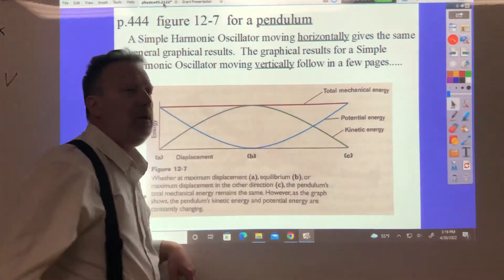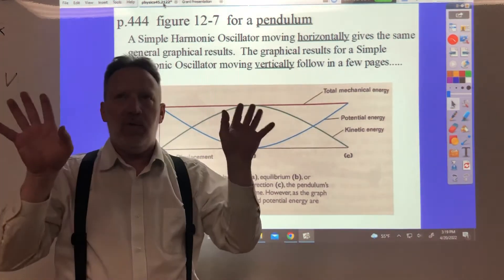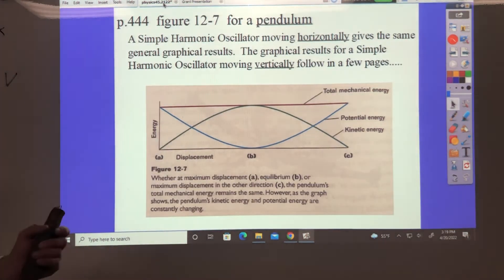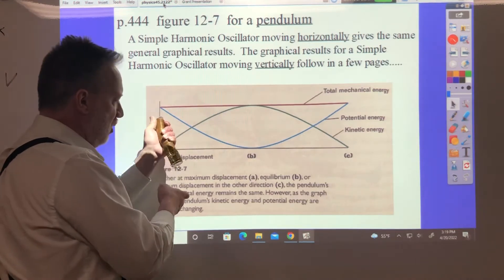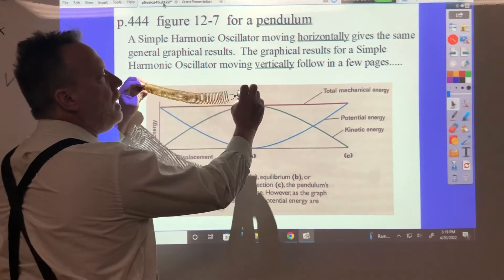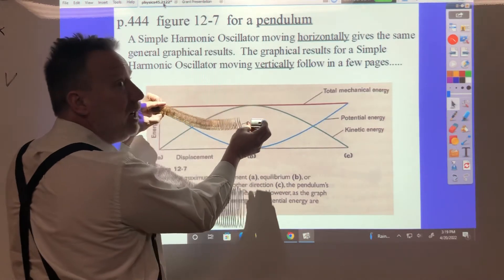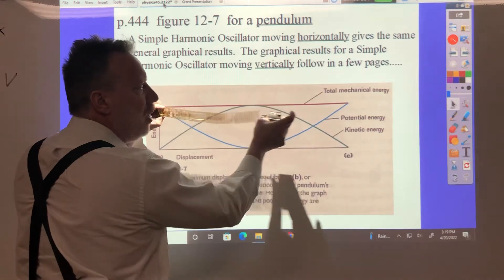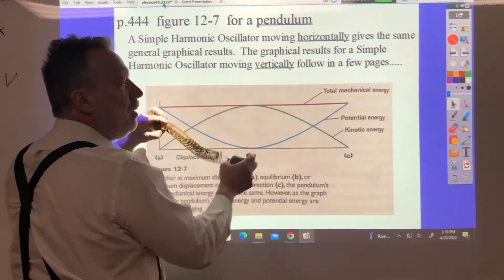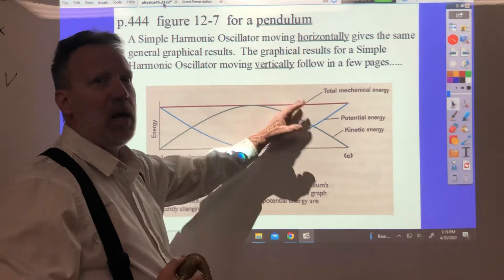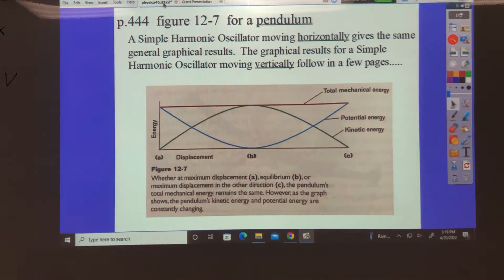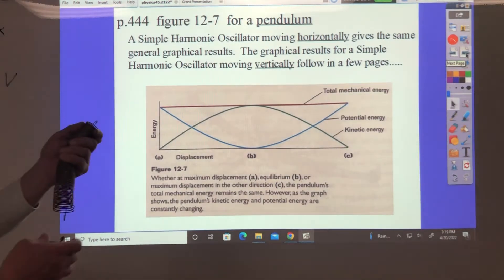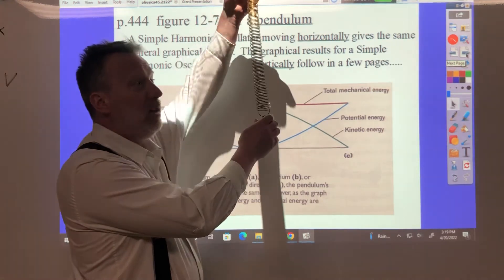If you had a mass attached to a structure that wouldn't move, sliding frictionless back and forth, this would be pretty much what you would have - the same thing.